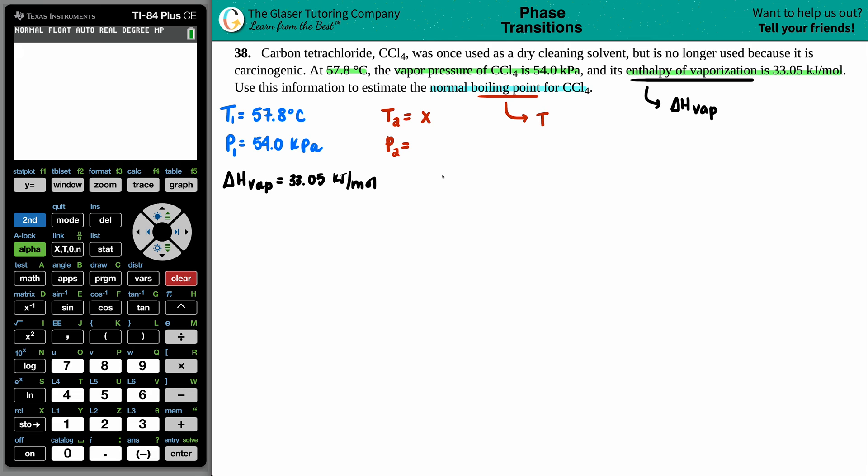Now we're definitely dealing with math here, so we know we have to use a formula. Especially when you have enthalpy values and you have two sets of temperatures and pressures, you're using the Clausius-Clapeyron equation. You don't really need to know the name of the equation, you just need to know what the formula is. It's natural log, ln, of the two pressures P2 divided by P1, equals your enthalpy of vaporization divided by R, times 1 over T1 minus 1 over T2.